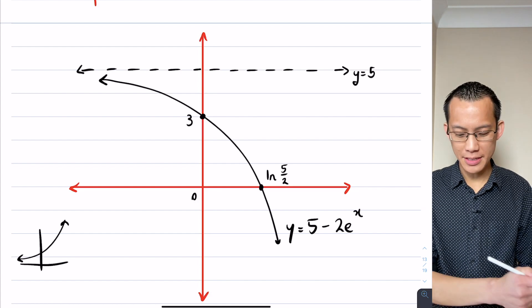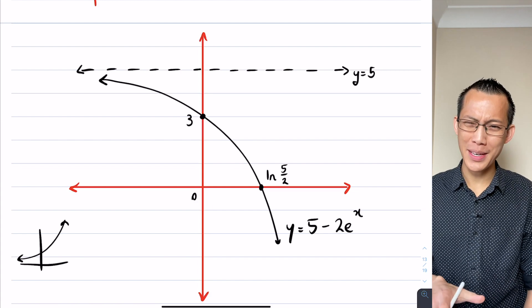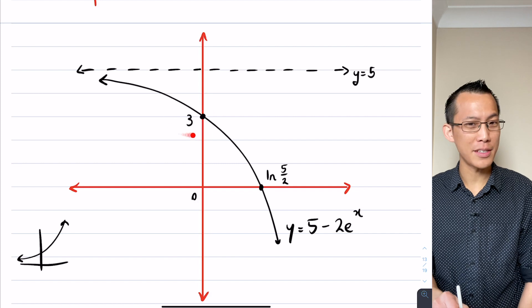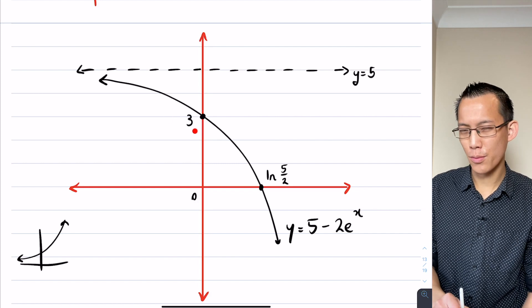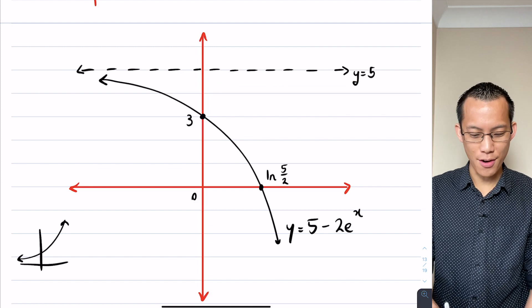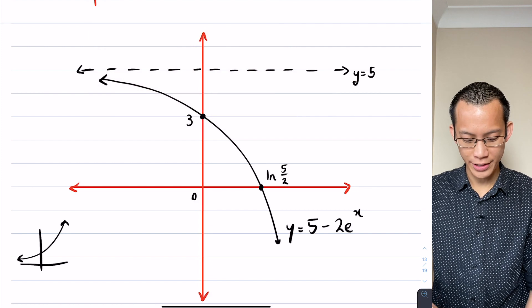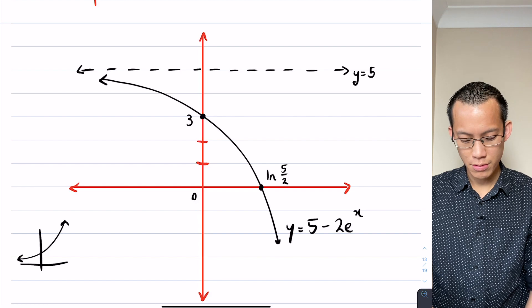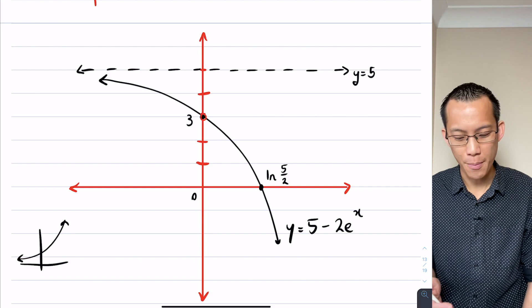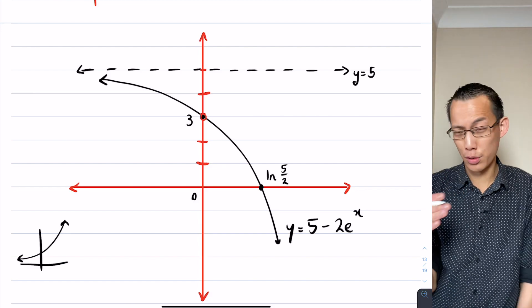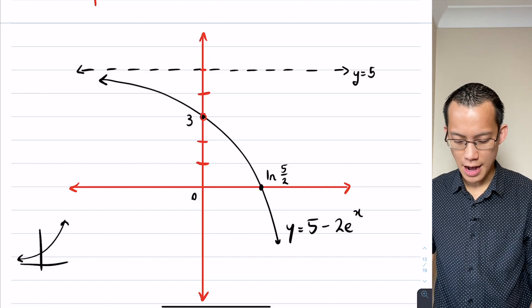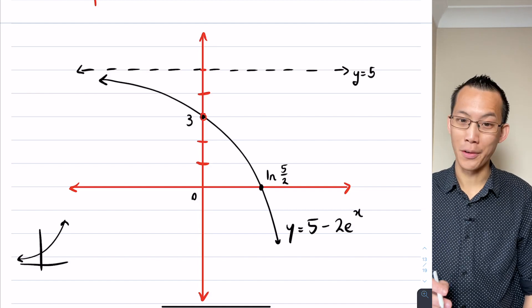One last thing worth mentioning before you go on to the exercises: please make sure your scale is consistent. See how this y-intercept is at 3 — well if the horizontal asymptote is at y equals 5, then the vertical scale has to line up: 1, 2, 3, 4, 5. If your 5 was way too high or too close to the 3, we'd say this is not an accurate representation of the graph, and you would not get full marks for that.